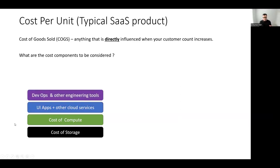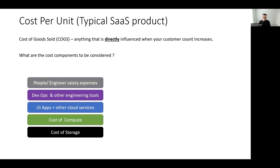Then comes DevOps and engineering tools cost — how many engineers are involved, what tools they use to create and deploy builds, and ensure the service runs 24/7, including monitoring costs. On top of that, you also have engineer salaries and other expenses. We'll come to what needs to be accounted for versus not, but these are all components to consider when factoring in the costs incurred in shipping a great product.